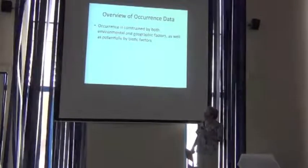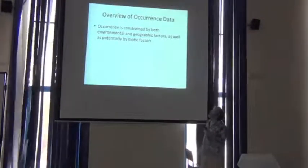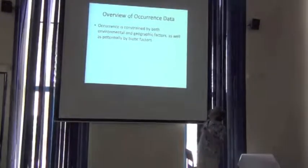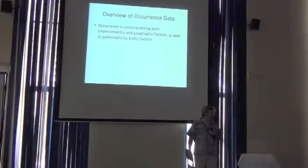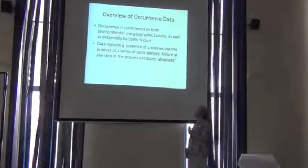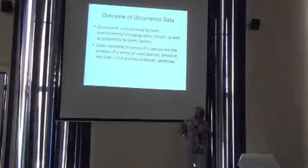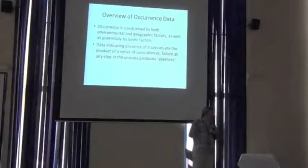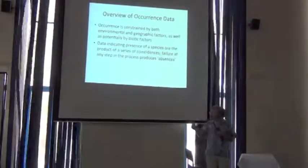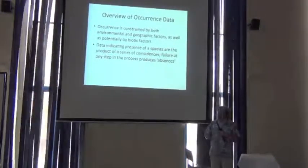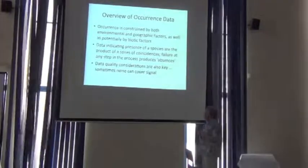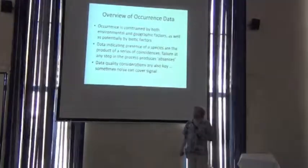So just to do a broad overview, occurrences are constrained by environmental and geographic and potentially by biotic factors. Presences are generated by a lot of essentially good luck events, and if any of those events fails, it looks like an absence. And you have to pay a lot more attention to data quality.